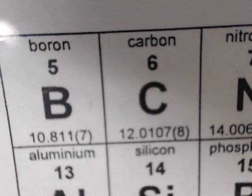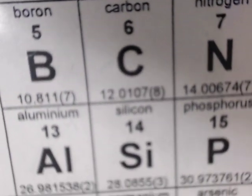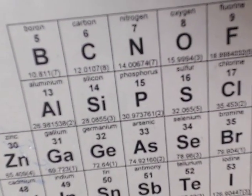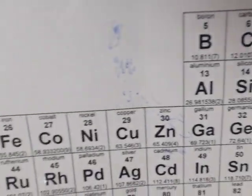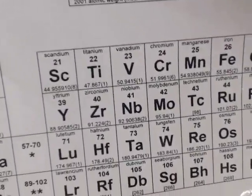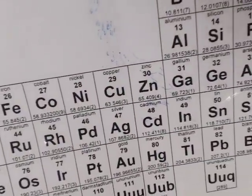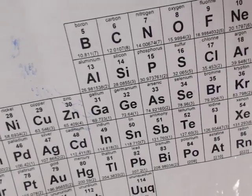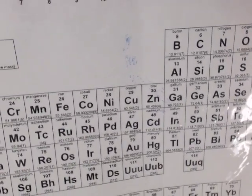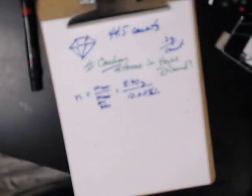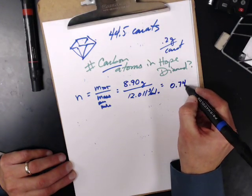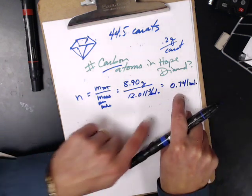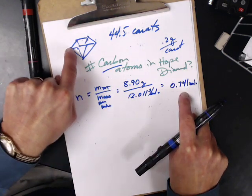All right. Well, I like this better when I was back down here. So, there's carbon again. Aluminum's floating around here somewhere. It's in there. Anyway. So, let's go back to... This gives me 0.741 moles. There are 0.741 moles in the Hope Diamond.